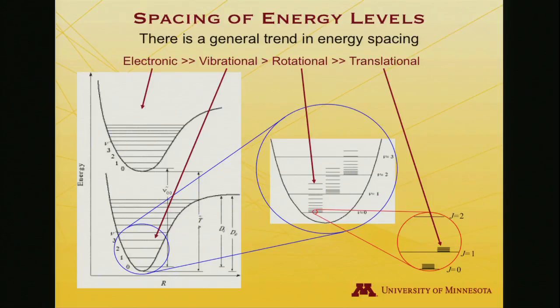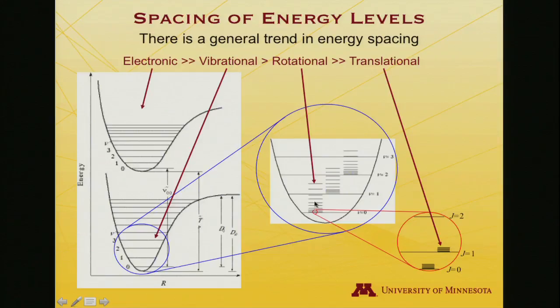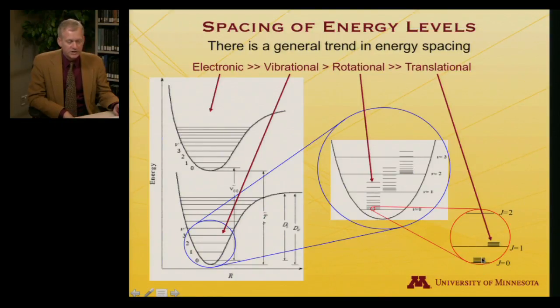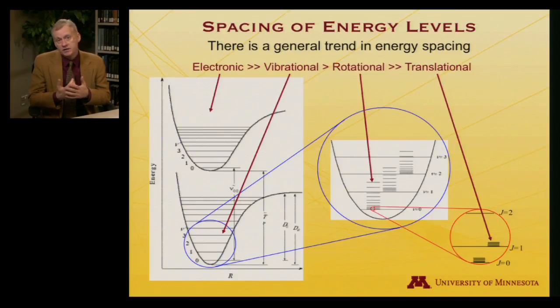Within each electronic potential is a series of vibrational levels, much more closely spaced than the electronic spacing. Zooming in on the vibrational levels, above each one you can see the even more closely spaced rotational levels. And zooming in yet again on the first few rotational levels, the translational levels are super-dense — extremely close to one another. Keeping this hierarchy of energy spacings in mind will be useful as we think about how energy partitions into the various kinds of motion.